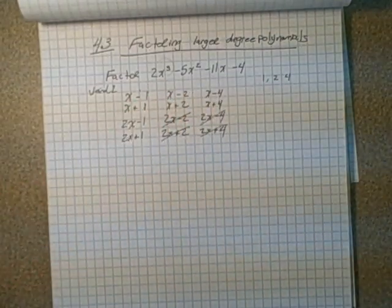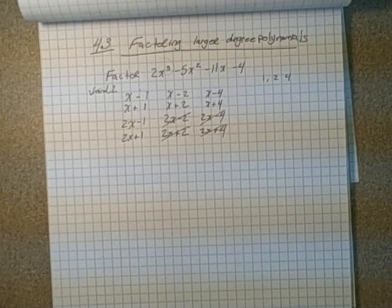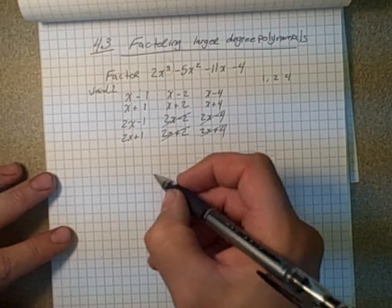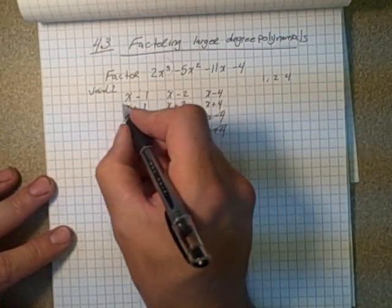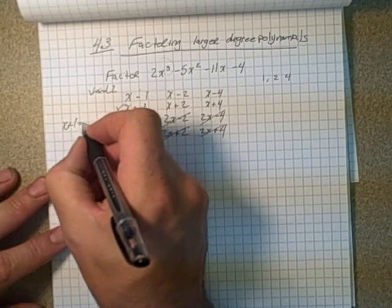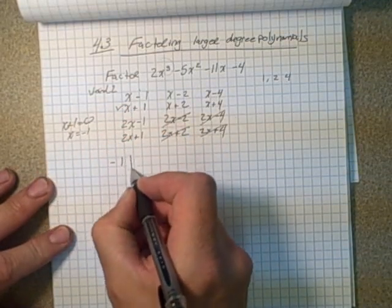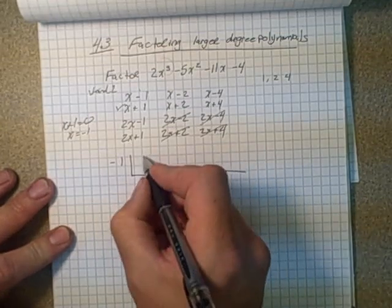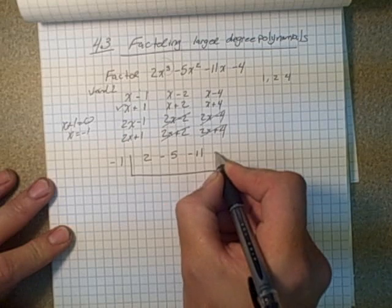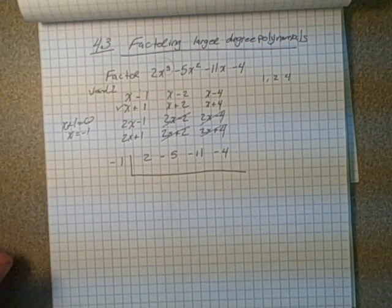So I'm going to choose in my first try or first trial, I'm going to use x plus 1 because it's easy to use. So I'm going to try this one first, x plus 1. If I equal that to 0, that gives me x equals negative 1, so I put negative 1 up here. Put all my coefficients in here, and make sure they're in descending order and then work it out.